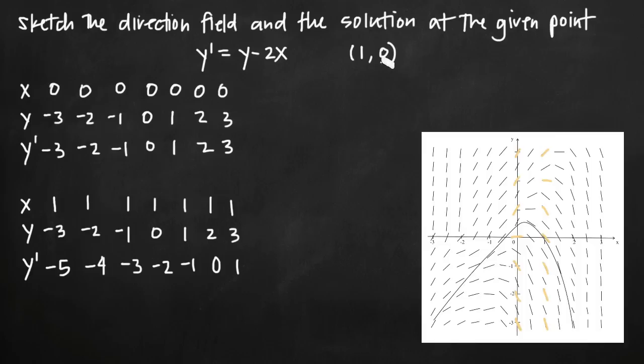Once we finish sketching our direction field, if we've been given a point and asked to draw a solution through it, all we need to do is find the point, plot it, and follow the small lines composing the direction field to sketch the solution. We find the point (1, 0), plot it, and follow the curve. Looking at the line in the direction field passing through (1, 0), the slope is negative two, so we follow that line. The slope becomes a little more gradual as we move, and near the next point (0, 1) the slope becomes positive, so we need to head in that direction, following the slope of that line.